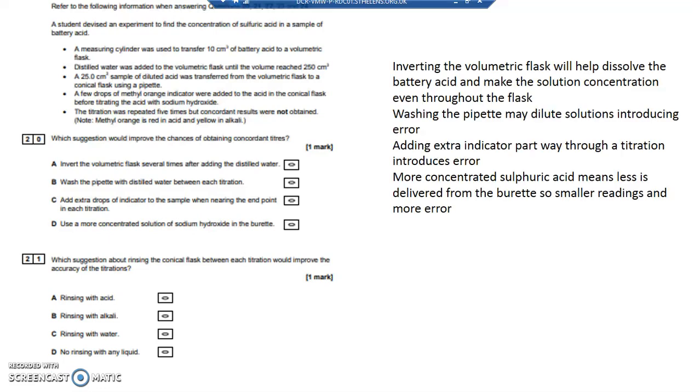Inverting the volumetric flask to help dissolve the battery acid, that's a good idea. Washing the pipette—well, you don't wash the pipette, you don't wash the burette. You don't wash anything used to deliver accurate concentrations. Washing the pipette will dilute the solution and introduce error.